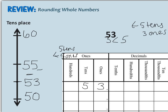Seeing that our number 53 is not greater than 55 shows that when rounding to the tens place, we end up with our minimum value of 50. So rounding the number 53 to the nearest tens place gives us 50, which is five tens and zero ones.